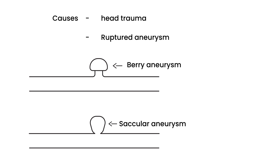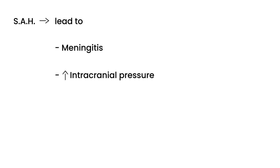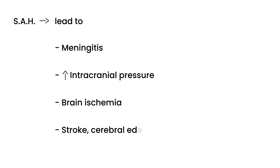Why is subarachnoid hemorrhage important? It's very important because it can lead to a lot of problems. It can cause meningitis, an increase in intracranial pressure, brain ischemia where the brain tissue is not getting enough blood, and it can also cause stroke and cerebral edema. As you can see, all these things can potentially kill a patient.